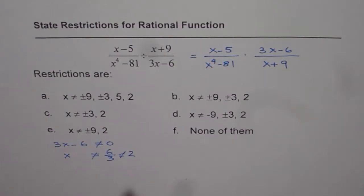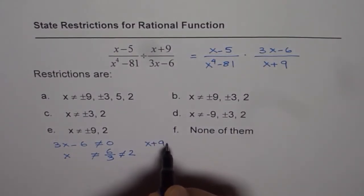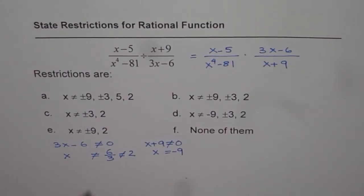The second restriction is x+9 is not equal to 0, that means x is not equal to -9.